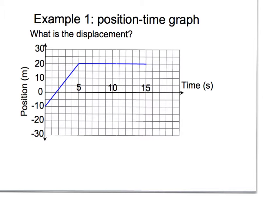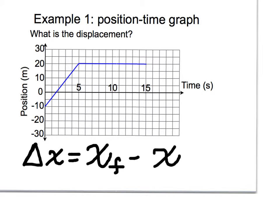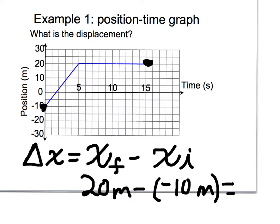You should remember, from a couple of nights ago, that if you're looking at a position time graph, your displacement, or delta x, is just x final minus x initial. And so here, our final x position is 20 meters, and our initial is negative 10. So in this graph, it's easy to do. 20 meters minus negative 10 meters, minus the negative is the same as adding. You get positive 30 meters.